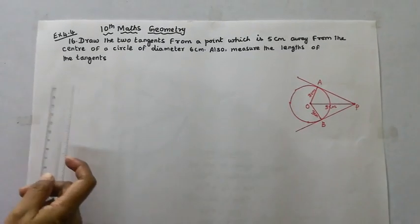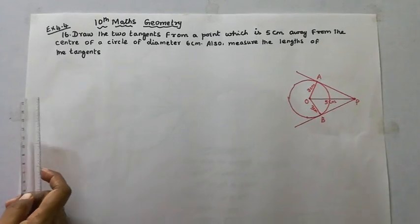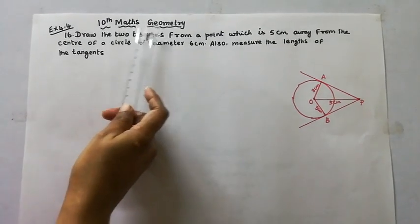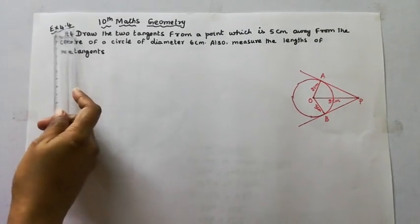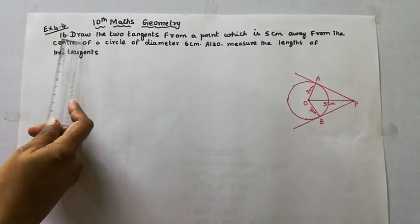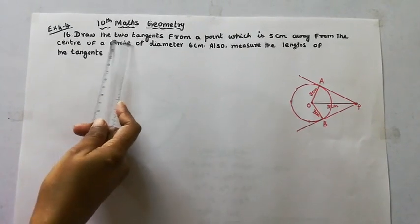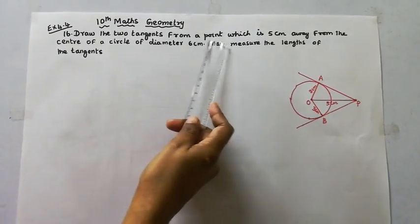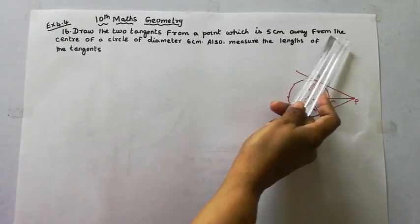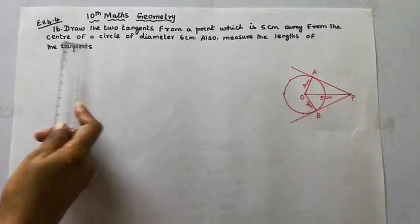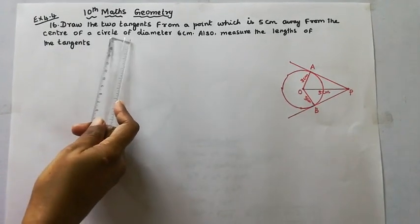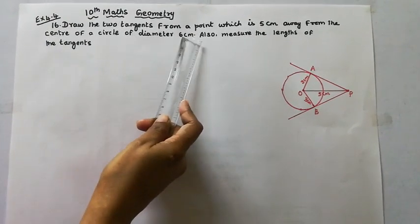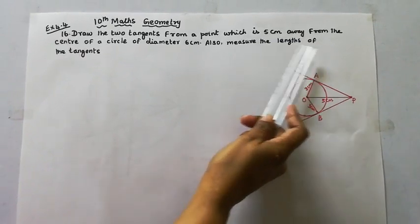Hello students, welcome to Max and Tumble channel. This is standard 10 geometry, exercise 4.4, 16th sum: draw the two tangents from a point which is 5 centimeters away from the center of a circle of diameter 6 centimeters, and also measure the length of the tangents.